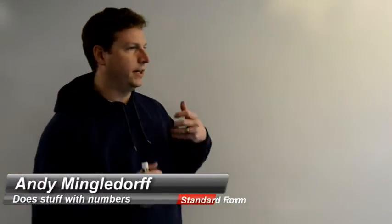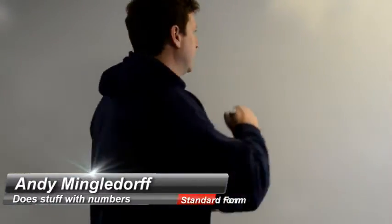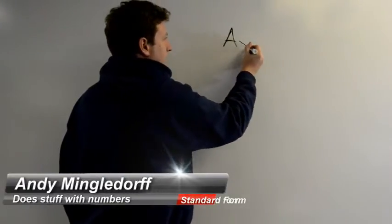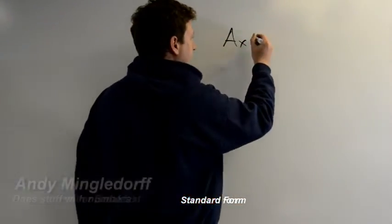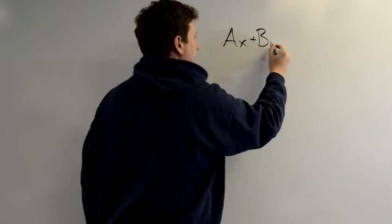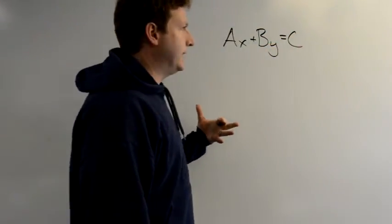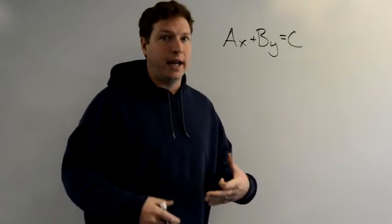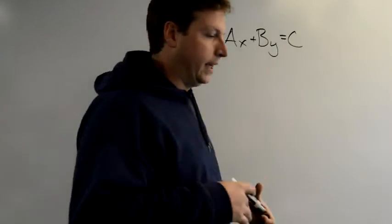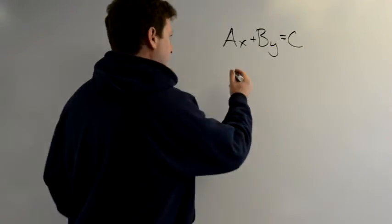Standard form of an equation, just another format. We're going to add some more letters in here just to make it fun. Ax plus By equals C. What's neat about this is you can find your x and y intercepts almost immediately. So I'm going to go ahead and plug in some numbers here.